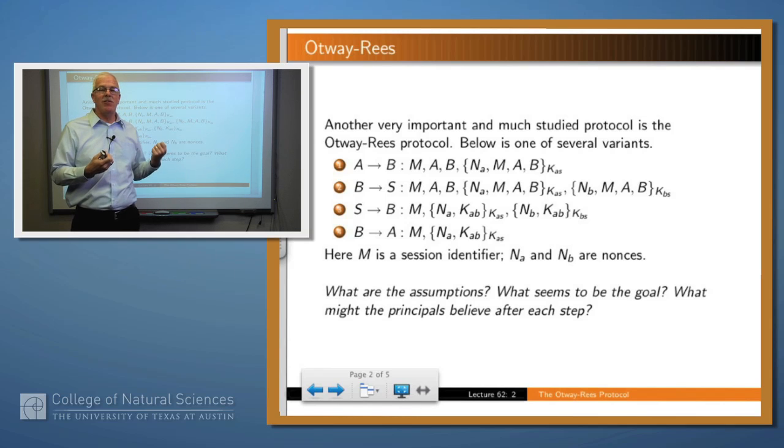B sends on to A the piece that contains the key for both of them, encrypted with K_AS.